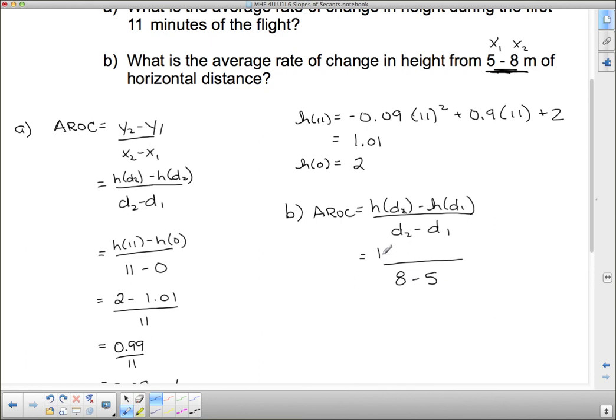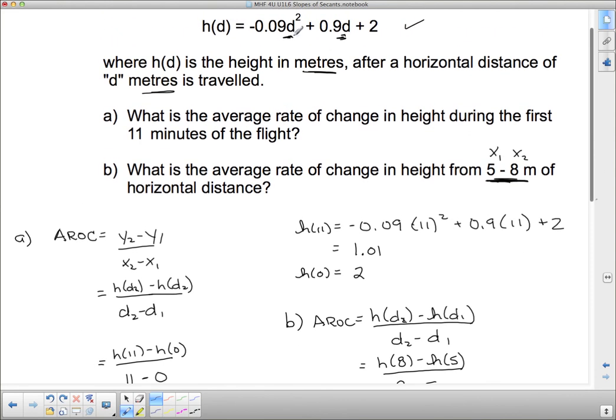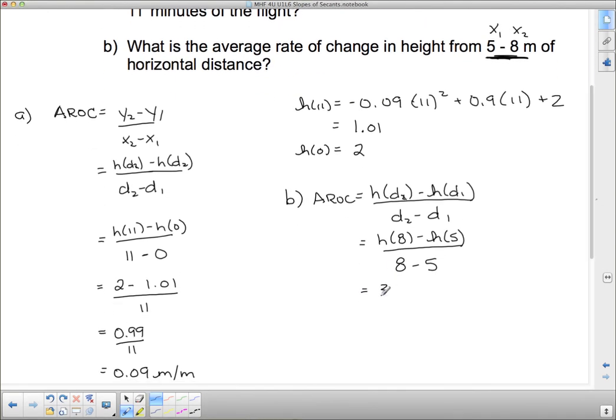And then you have to actually figure out the d's. So we need h(8) minus h(5). Let's see if we can get h(8) all in one go on the calculator. I'm going to pull up my calculator. And I'm going to type in -0.09 times 8 squared, which is 64, plus 0.9 times 8, which was our d, plus 2, is 3.44. So that's 3.44 minus h(5).